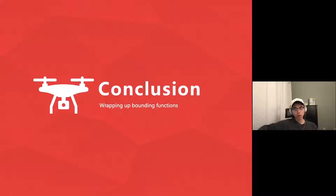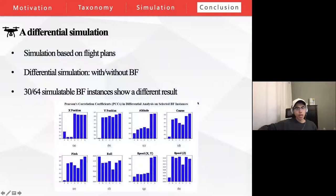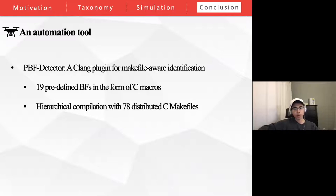The 10-minute story of BFs and UAVs is coming to an end. Our study adopts a two-pronged approach. Statically, we proposed a data type-based taxonomy on 109 BF instances, further classified into five categories and 19 use scenarios. Dynamically, we performed differential simulations to analyze the impact of BFs quantitatively, and 30 out of 64 simulatable instances produce different results. A key contribution of this study is our tool, PBF detector, developed for automatically identifying BF instances in a real-world code base with complex compilation schemes.